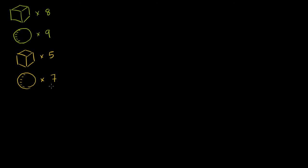I'm going to stick them all in this bag, shake that bag, pour it out, and look at the first object that falls out. What I want to think about in this video is what are the probabilities of getting different types of objects?